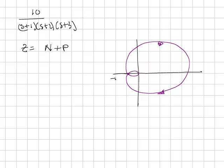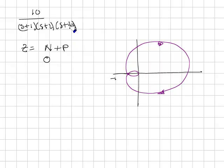One last example. The transfer function is 10 over (S plus 1)(S plus 2)(S plus 3). The question is: when put in unity feedback, is the system stable? The resulting Nyquist diagram shows no encirclements of the minus 1 point, so N equals 0. P equals 0 since all open-loop poles are stable. Therefore Z equals 0 — there are no unstable poles in the closed-loop system.